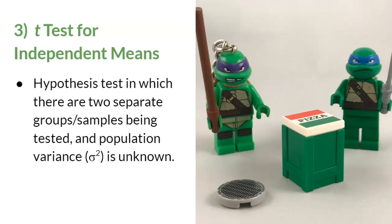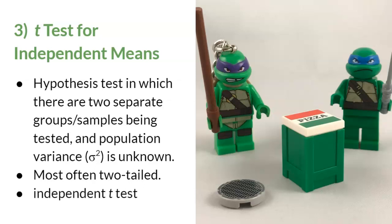Like in this photo, Donatello and Leonardo are two very different Teenage Mutant Ninja Turtles, just like this t-test compares two different groups. Because we're comparing two separate groups, this test is most often a two-tailed test. This test is also referred to as an independent t-test.